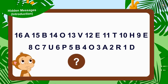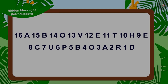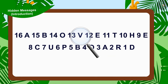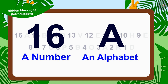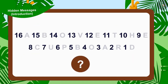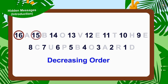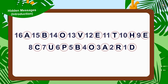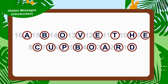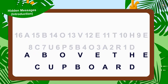Can you see any hidden message in Appu's second letter? If we look at Appu's second letter carefully, we will see that there is a number and an alphabet written every time. The numbers are in decreasing order, but there is no hidden message that can be found in them. Now, let us take a look at the alphabets. If we write the alphabets separately, we will find this written.